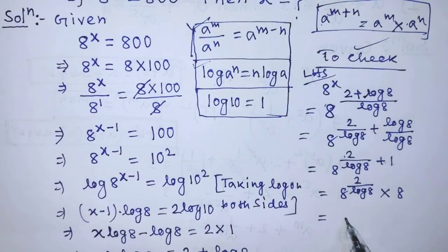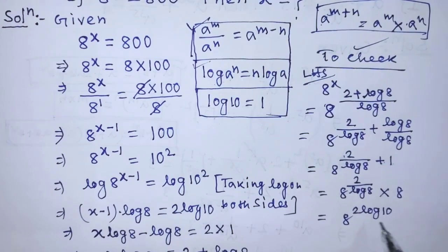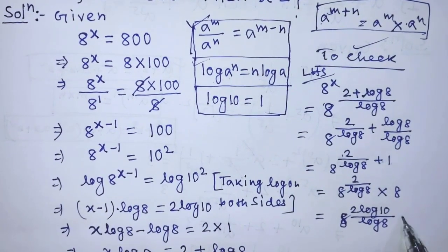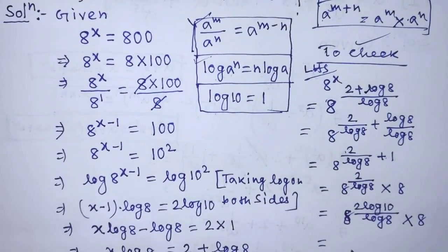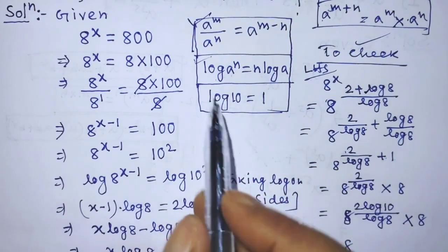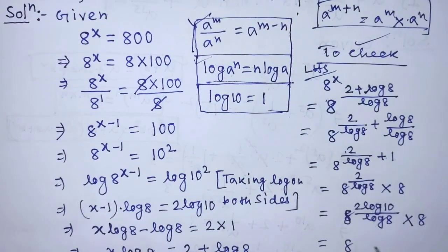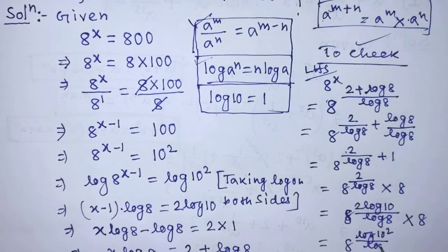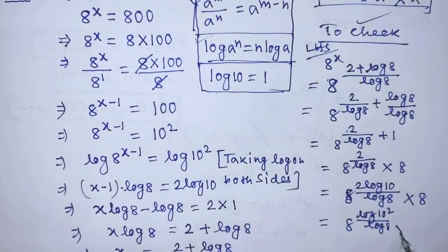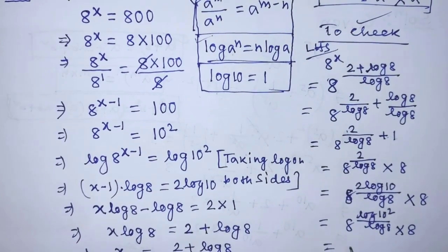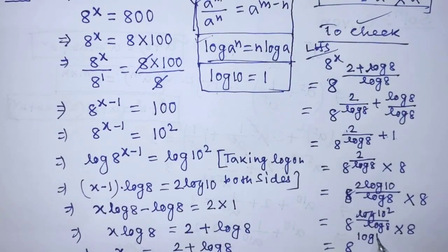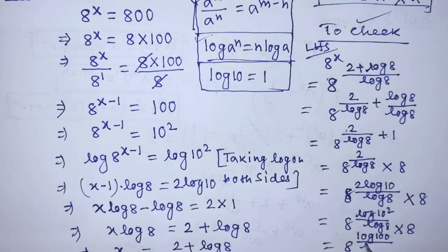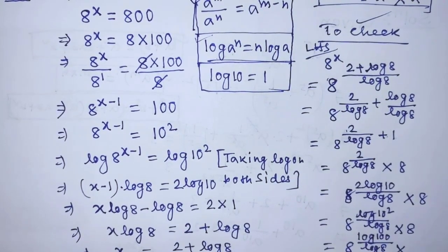...times 8. After that, we write from this exponential form: 8 to the power — in place of 2 we write 2 times log of 10 — over log of 8, times 8. After that we get 8 to the power log of 10 to the power 2 over log of 8, times 8. So it will be 8 to the power log of 100 over log of 8, times 8.